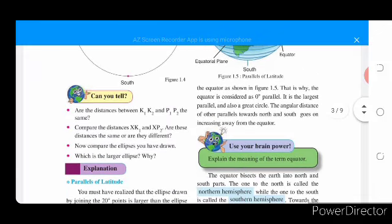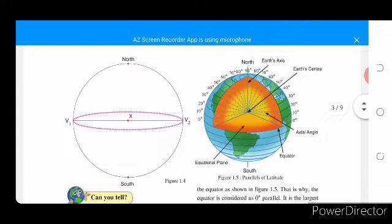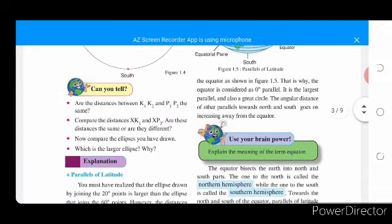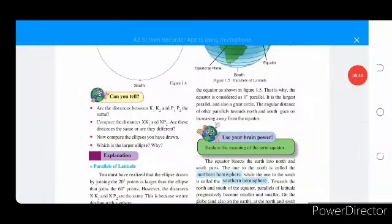Can you tell, are the distances between K1, K2, P1 and P2 the same? Compare the distance X K1 and X P2. Are these distances the same or are they different? Now compare the ellipses you have drawn. Which is the larger ellipse? Why?